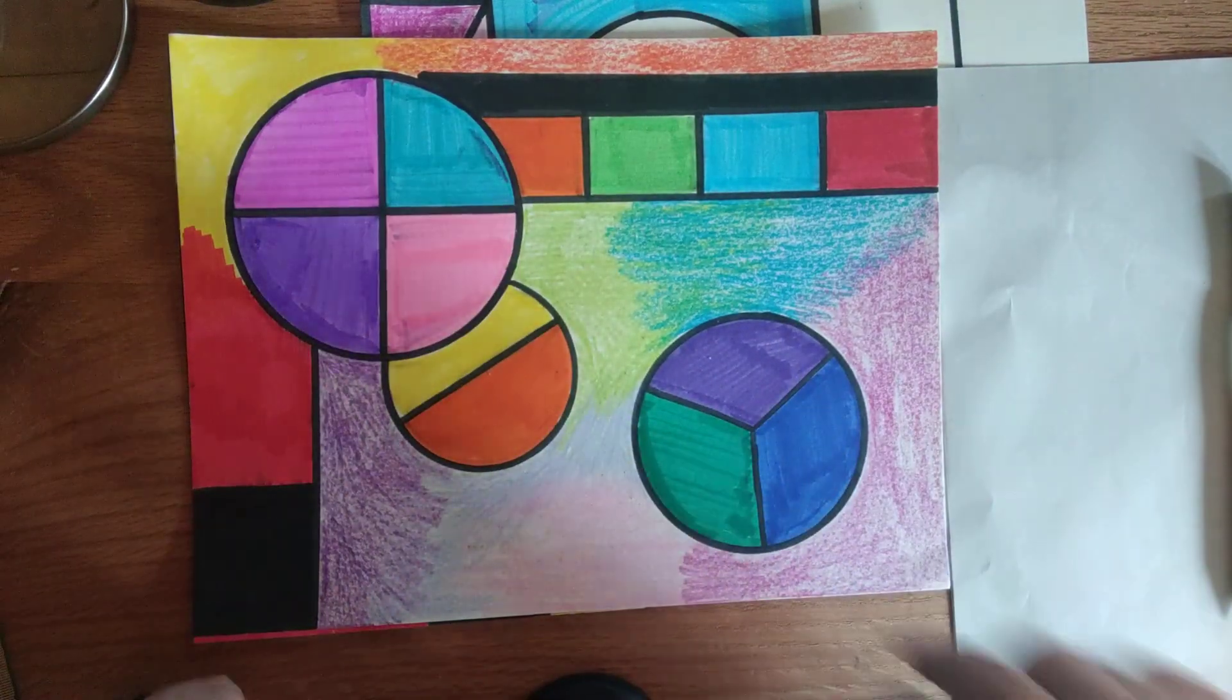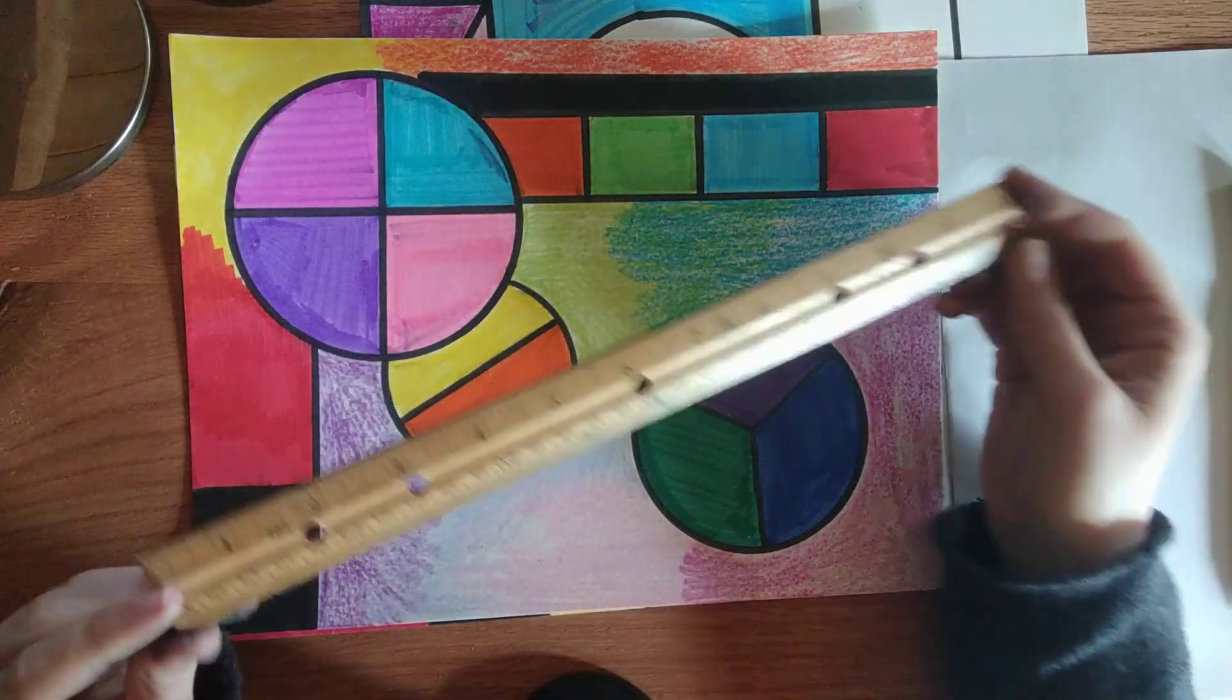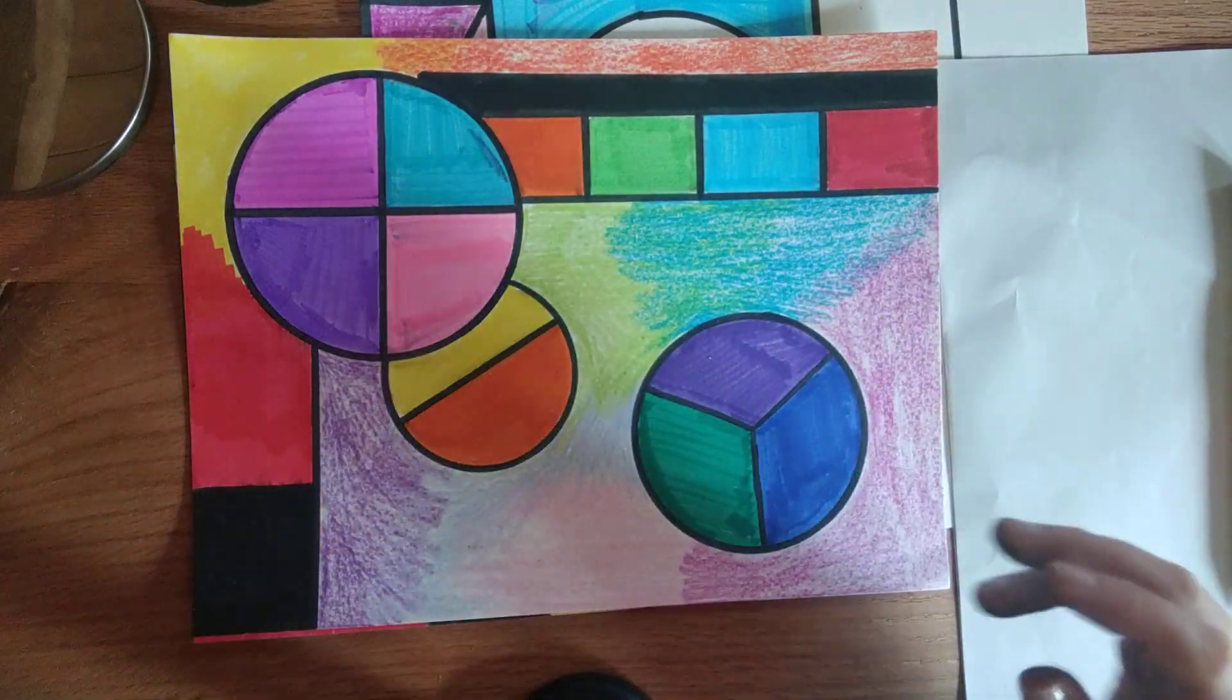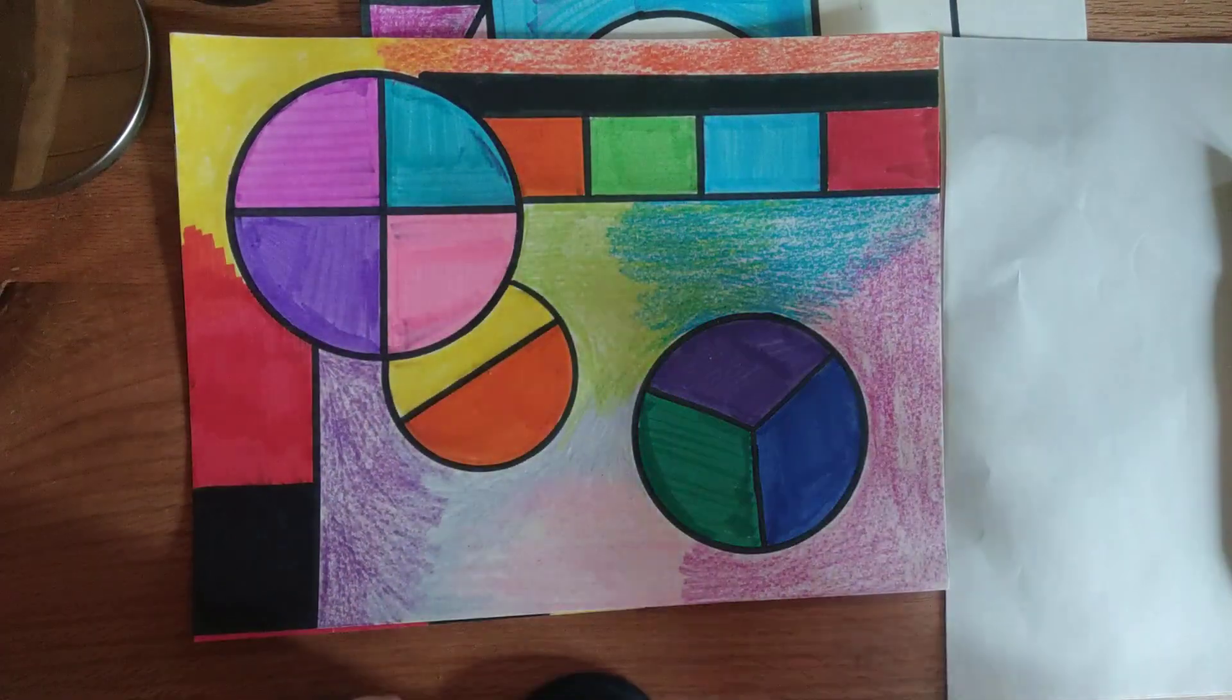When I traced these shapes, I used my ruler. You definitely want to use a ruler for this kind of artwork to make these straight lines and to divide up my circle.